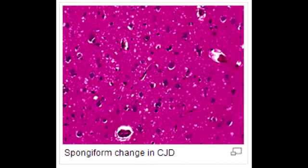The cause of Creutzfeldt-Jakob disease is infectious proteins called prions. Prions are misfolded proteins which replicate by converting their properly folded counterparts.